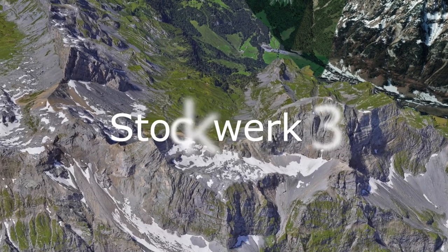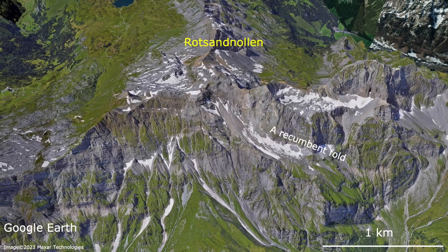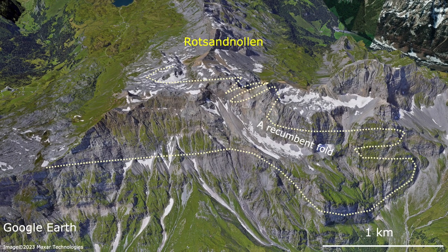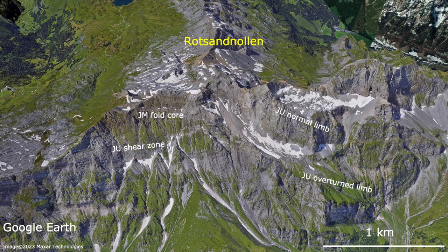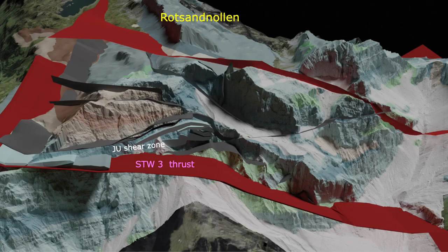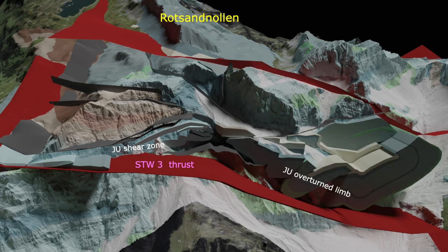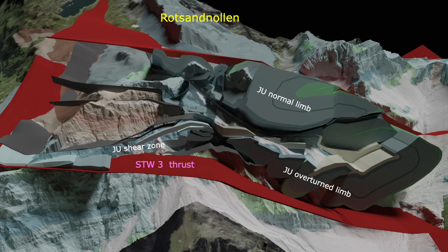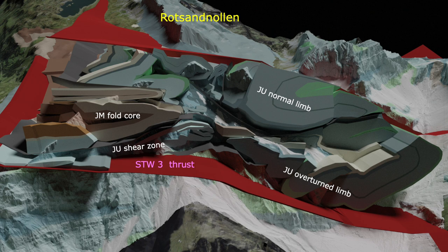The Rothsalt Knollerld forms the southern part of Stockwerk III and is a significant geological structure. This large recumbent fold is internally divided into four main units, each of which is further split into imbricated and severely deformed compartments. The four units are: the basal shear zone located within Upper Jurassic marls and limestone; the overturned fold limb with several Upper Jurassic imbricated compartments; the normal fold limb, which also exhibits heavily folded Upper Jurassic rocks; and the fold core consisting of Lower to Middle Jurassic rock.